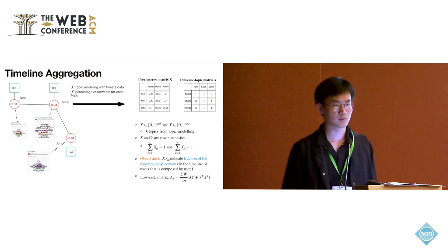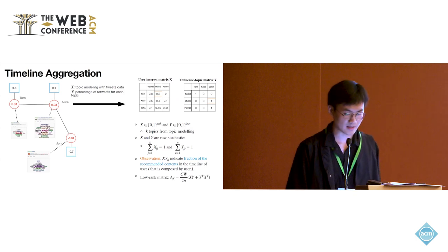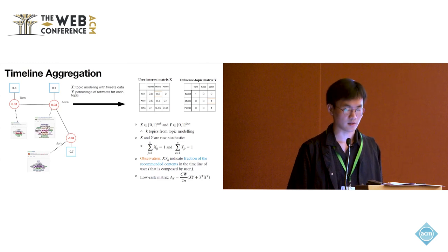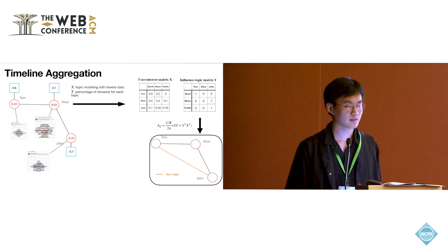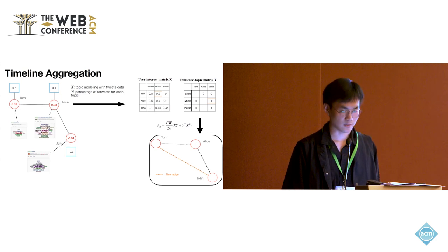Naturally, we could introduce the low-rank matrix AX, which is a matrix that involves X, Y and the parameter c that controls how many weights are in this matrix. At a high level, this AX represents a latent graph, introducing some new edges based on users' and influencers' common interests.